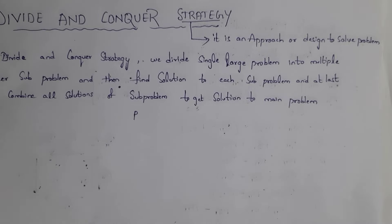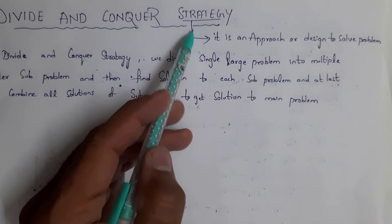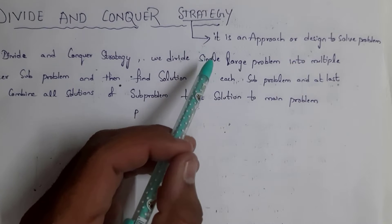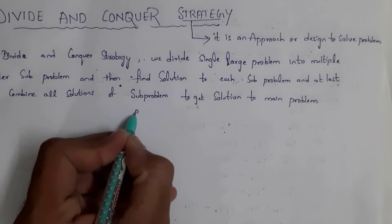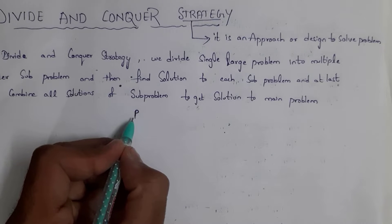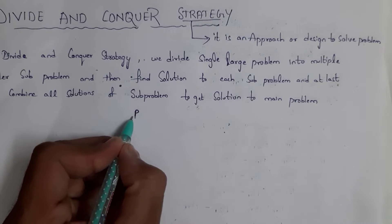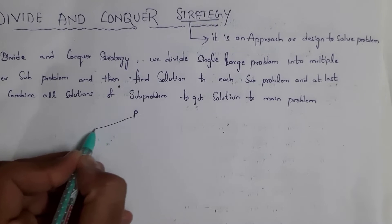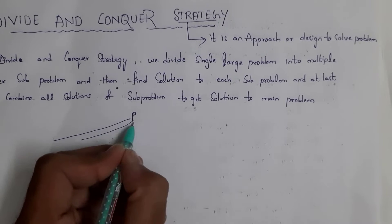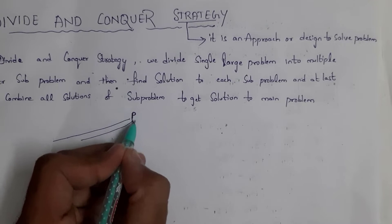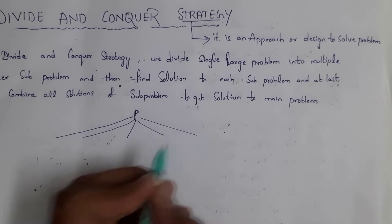Let's get started. What is the meaning of strategy? The meaning of strategy is nothing but it is an approach or design to solve a particular problem. For example, if there is a problem, in divide and conquer strategy we will break down this problem into multiple sub-problems.